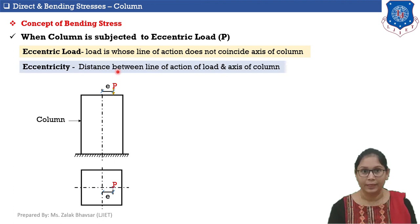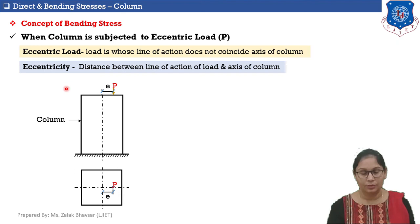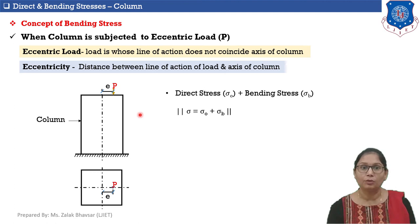The distance between the line of action of the load and the axis of the column is known as eccentricity. Whenever a column section is subjected to eccentric load, both direct stress σ₀ and bending stress σB will be developed. The total stress developed in the column section is the summation of direct stress σ₀ plus bending stress σB.